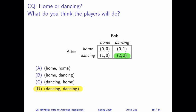Hi, everyone. This is Alice Gao. In a previous video, I introduced the homeward dancing game and I discussed the intuition, which is that both players, Alice and Bob, seem to be happier if they choose to go dancing. In this video, I'm going to show you how to formalize this intuition using a solution concept called the dominant strategy equilibrium.